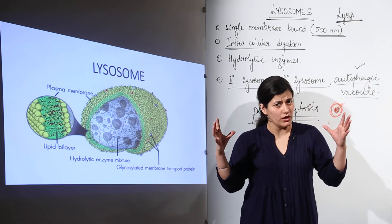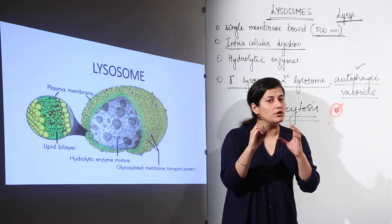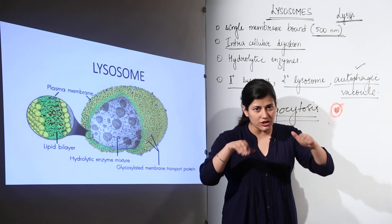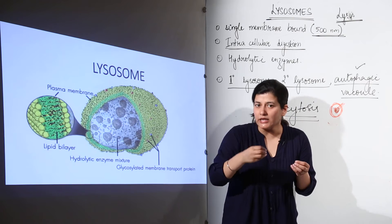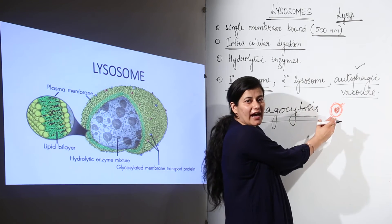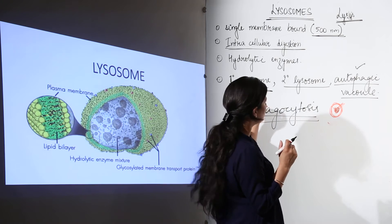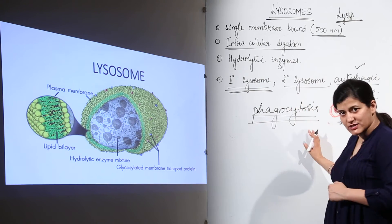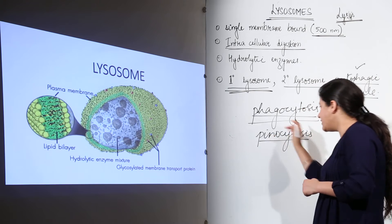The phagocytic vacuole comes close to the food particle, engulfs it inside, then comes in contact with the lysosome. The lysosome engulfs the entire vesicle; it gets merged into the plasma membrane, which is a fluid structure. The lysosome takes in the phagocytic particle — when the phagocytic vacuole is engulfed by the lysosome, the primary lysosome is formed. When digestion starts, the secondary lysosome is formed. If the component is water, we have pinocytosis.